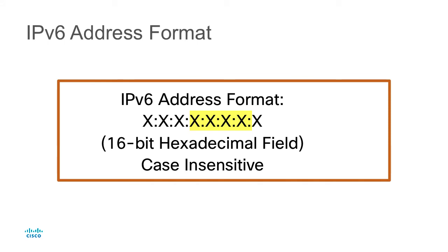Now, let's say that we have multiple 16-bit fields that are a zero value. We can take a shortcut and represent those with a double colon. But we can only use that double colon once in an address. The reason is that the protocol will insert zeros where that double colon is until the entire address is 128 bits. If we used it twice, the protocol would not understand how many zeros to place in each field. So if we use it only once, it knows to fill in zeros until the address is 128 bits.